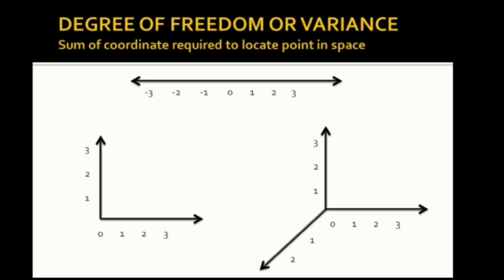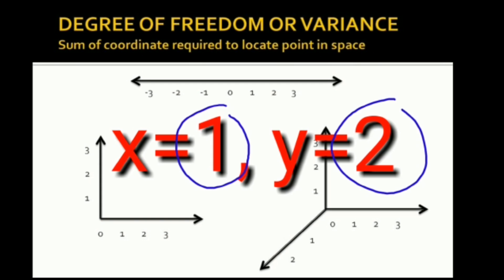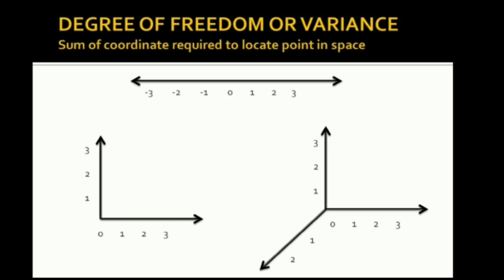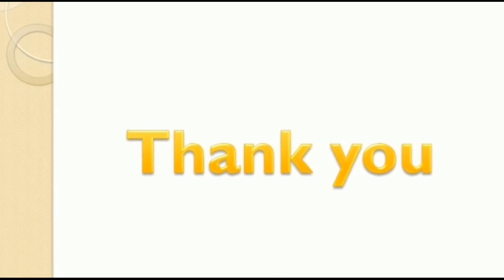Remember, degrees of freedom are independent of the values of coordinates — what matters is the number of coordinates required. Whatever the value of the coordinate is immaterial; what counts is how many coordinates are needed. That number is nothing but the degrees of freedom. Thank you for watching this video.